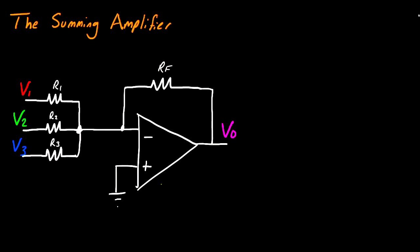We are going to be analyzing the summing amplifier. The function of this circuit is pretty self-explanatory, and basically what it does is it takes two or more voltages. You can continuously add more of these upwards, and it's still going to do the same thing, and it adds them together.